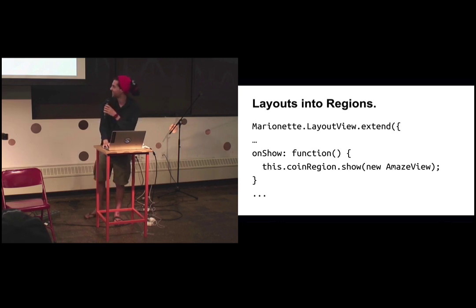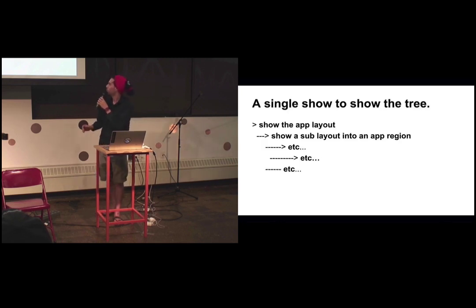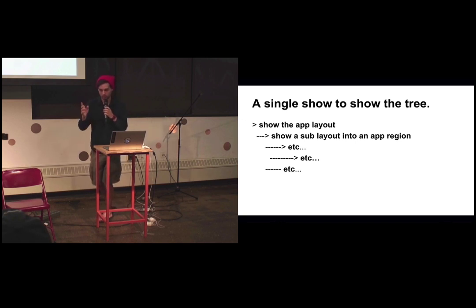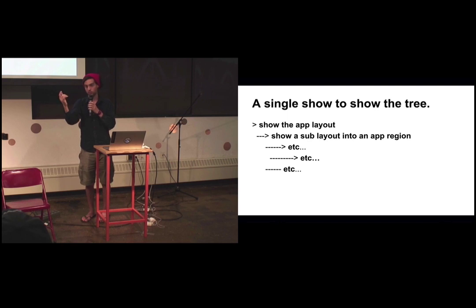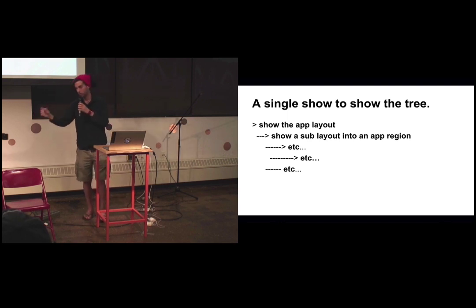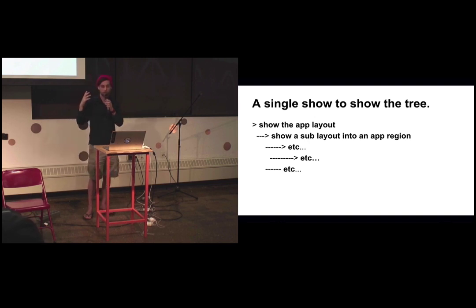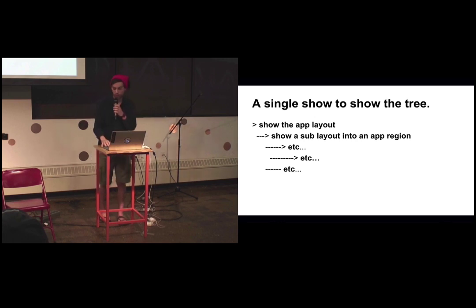Think of it this way: you can call show on a single layout inside of a region. That layout, if you hook into on show, is then going to show all your views within all of its regions. All of its regions that now have views are going to say, 'I've been shown — show my things,' and keep going down and down. So that complex layout we saw earlier is a single show call.